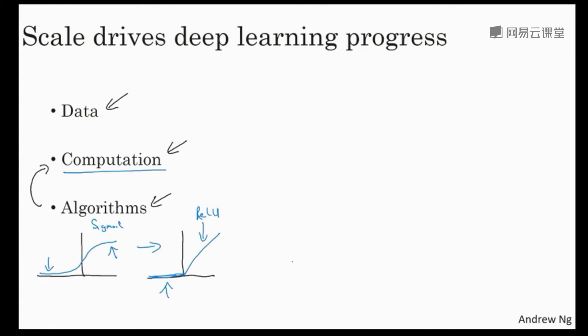The other reason that fast computation is important is that it turns out the process of training your network is very iterative. Often you have an idea for a neural network architecture and so you implement your idea in code. Implementing your idea then lets you run an experiment which tells you how well your neural network does. And then by looking at it, you go back to change the details of your neural network and then you go around this circle over and over.